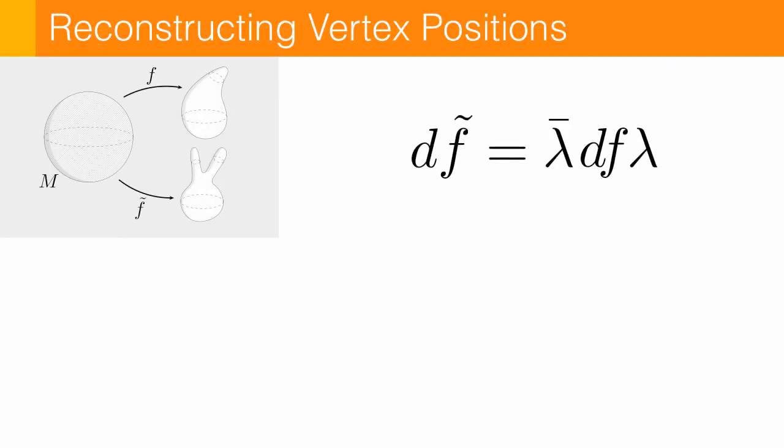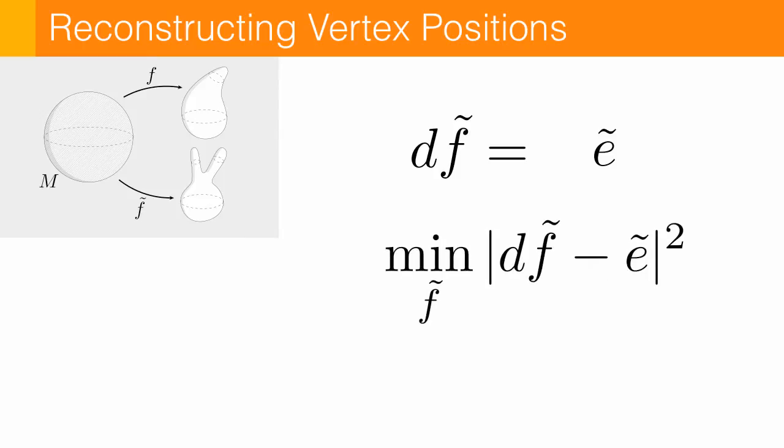Okay, so once we have lambda, our spin equivalence condition, again, just becomes a linear system because the right hand side is now constant. And what does this mean for our mesh? Well, remember that df, the differential, is just our edge vectors. Lambda tells us how to rotate and scale these edges to get new target edges E tilde. And then we want to find the new vertex positions F tilde that come as close as possible to these edges, which we do by solving a least squares problem. And this just amounts to a standard Poisson problem.